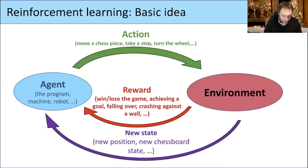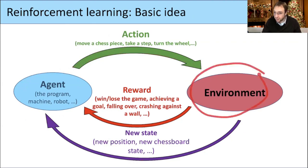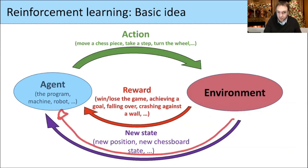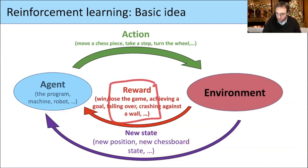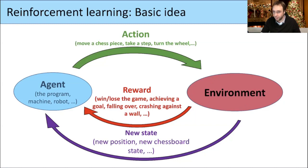In the chess example, the agent is the chess program, an action is to move a chess piece, and the environment is the other chess player who will receive your move and react to it, giving back a new state — a new chess board. At most points you don't get a reward, but at some point you make the final winning move and get a positive reward, or the opponent makes the final move and you get a negative reward by losing the game.